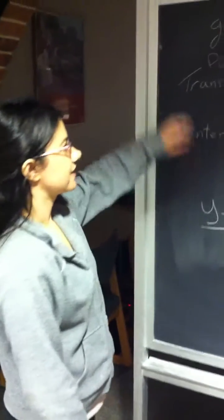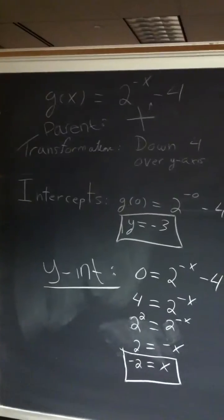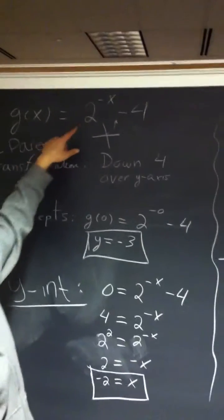Hi everybody, I'm going to be doing this problem. It is g of x equals 2 to the negative x minus 4.